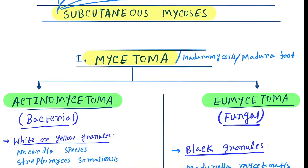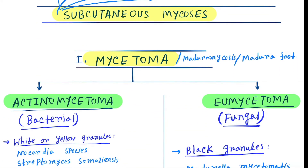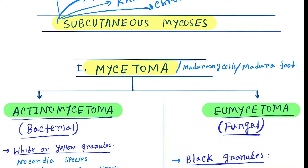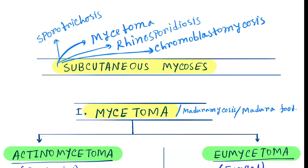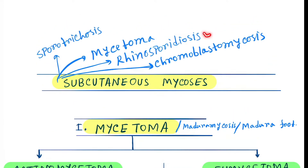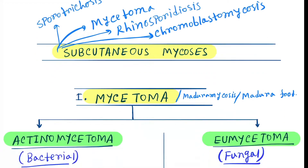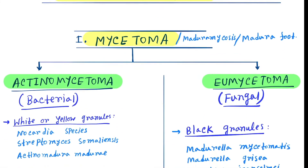Hello friends, today our topic is subcutaneous mycosis. As the name implies, it involves the subcutaneous tissue. It is of four types: mycetoma, rhinosporidiosis, chromoblastomycosis, and sporotrichosis.